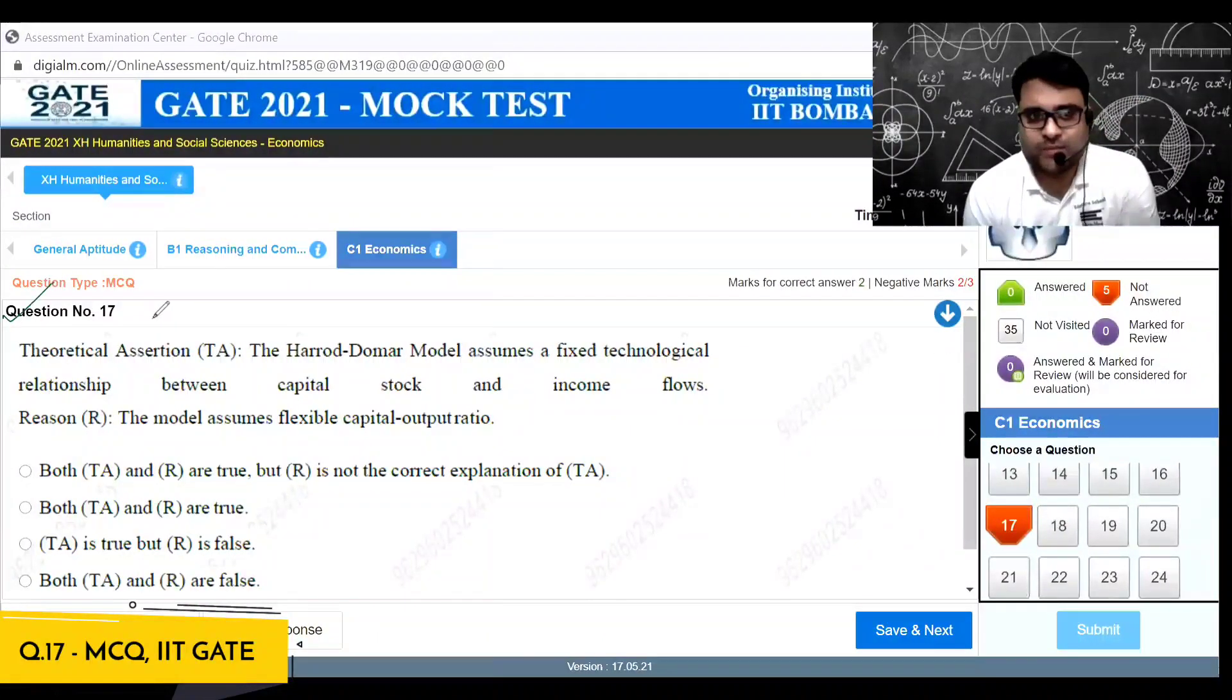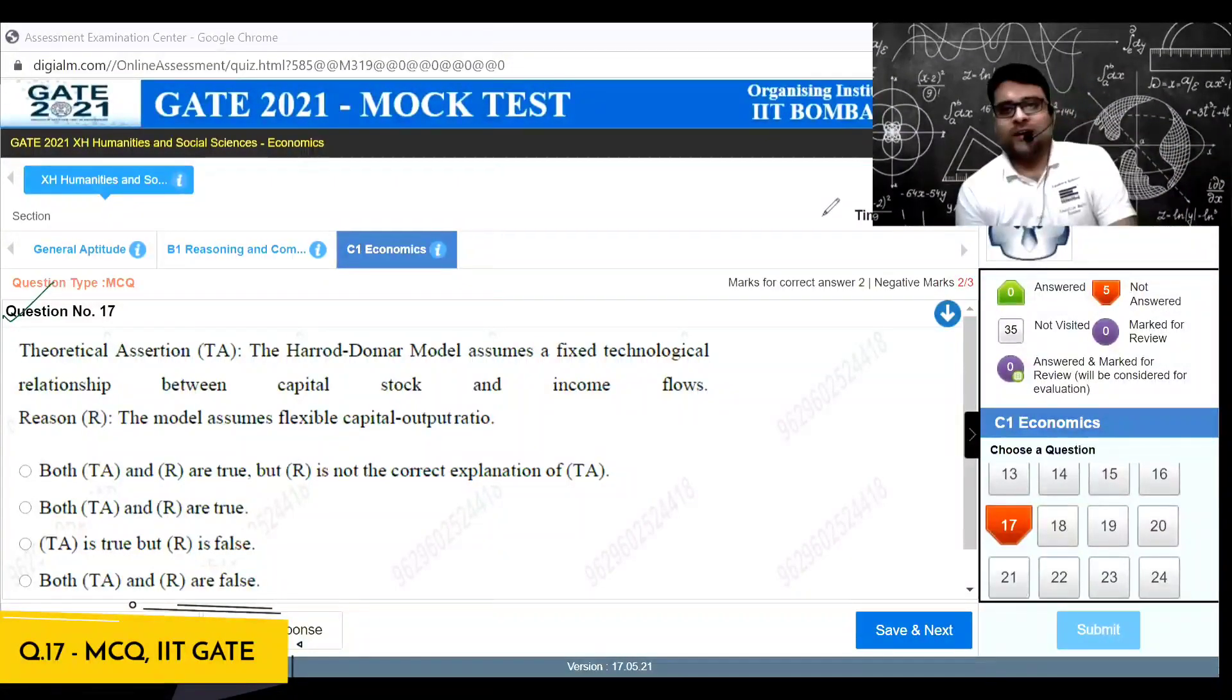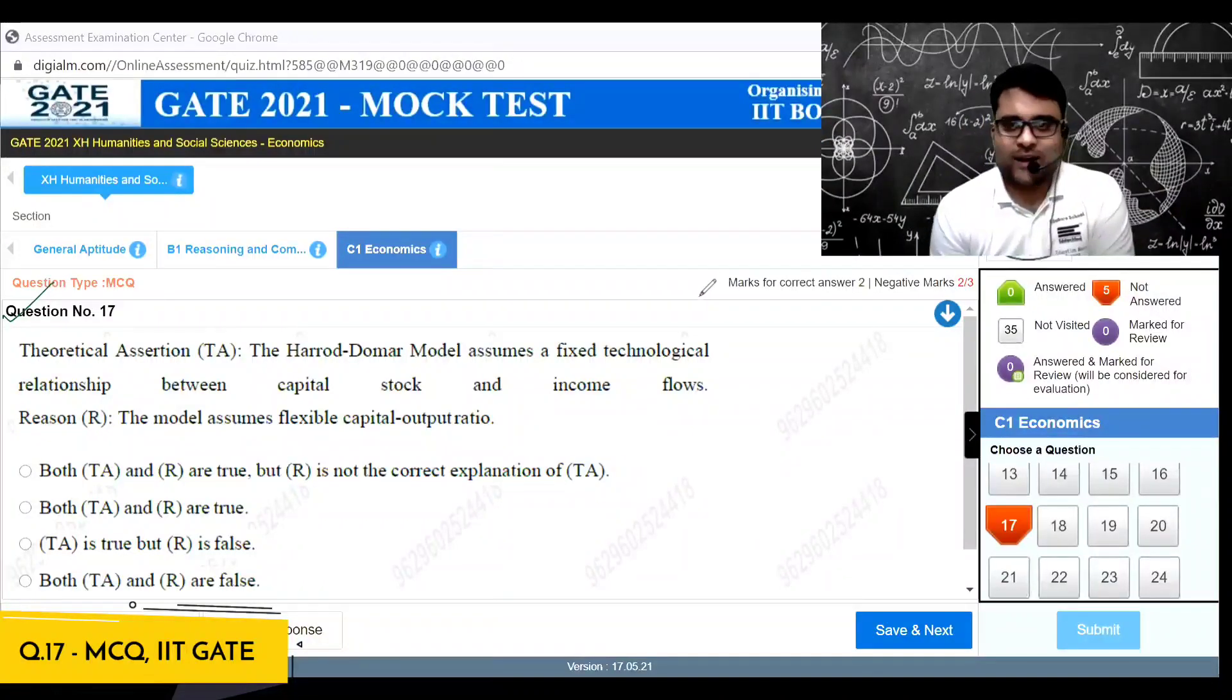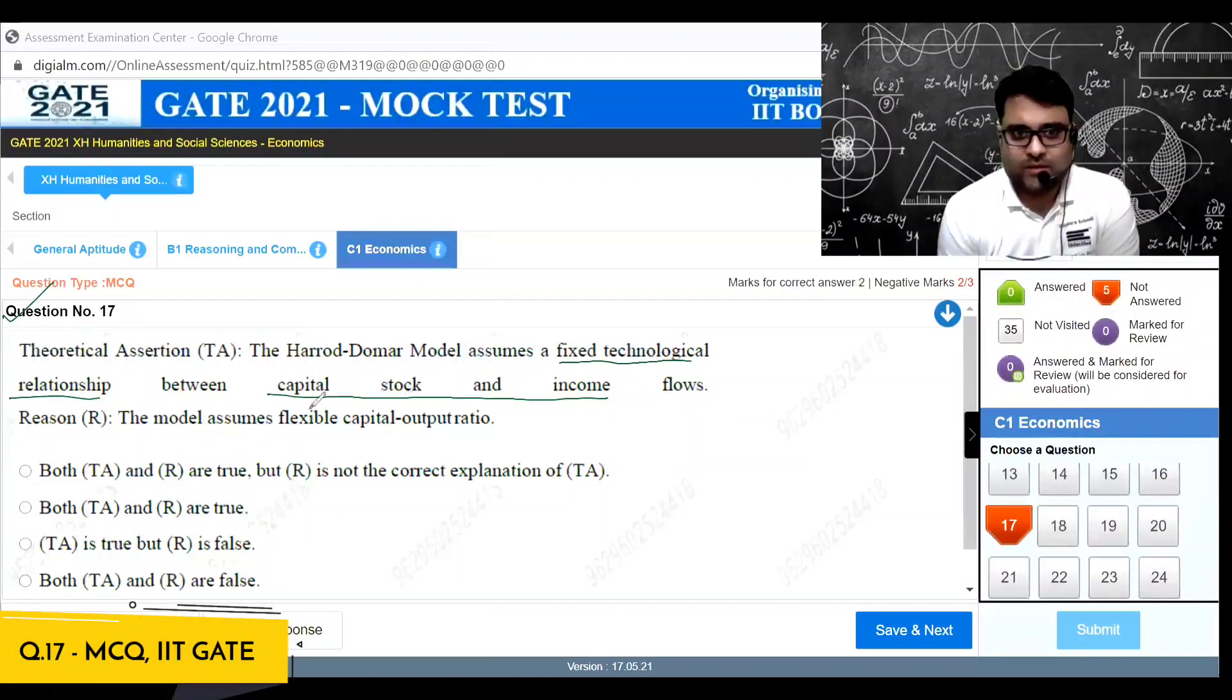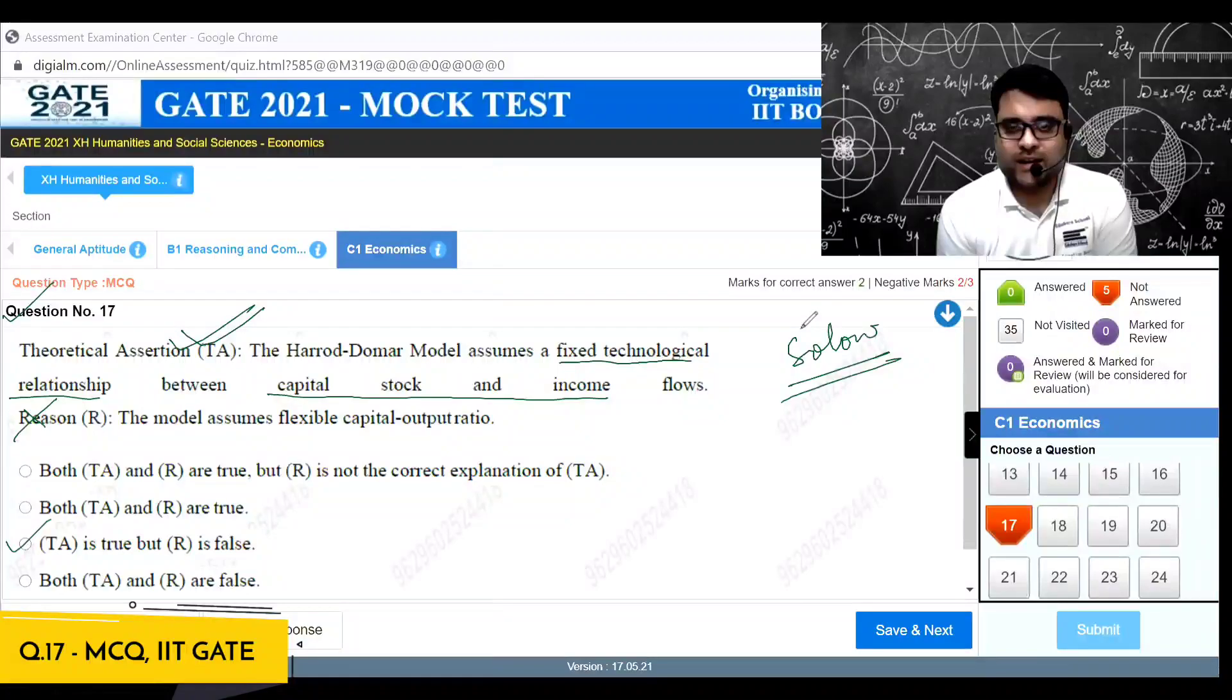Gate 2021 question number 17 in the economics section. It's a direct question of the Harrod-Domar model. Harrod-Domar has a fixed technological relationship between capital stock and income. The model assumes flexible, so R is not there, TA is there. Answer is TA is true but R is false. You'll get direct questions from the Harrod-Domar, from the Solow model, basically the growth models.